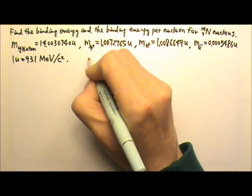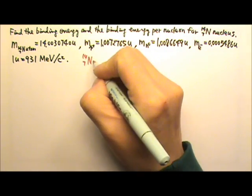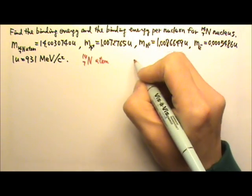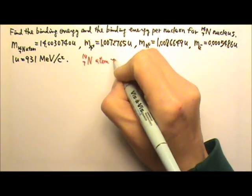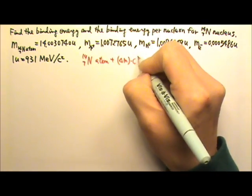If this is the atom, that means after we add the binding energy which is delta m times c squared, it is going to break into constituents.